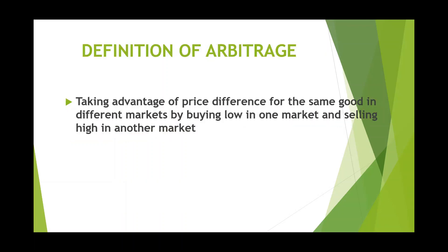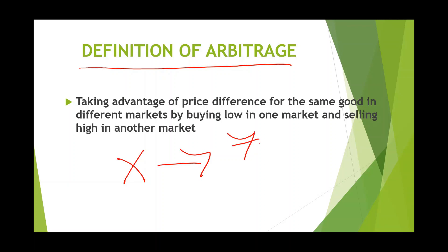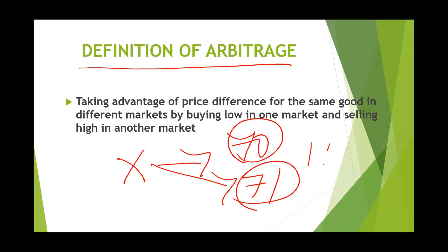First, let us understand the meaning or definition of arbitrage. Arbitrage is a process of taking advantage of price difference for the same goods. For example, if product X is quoted at 70 rupees in one market and 71 rupees in another market, taking advantage of that one rupee price difference for the same product is called arbitrage.